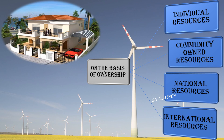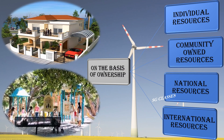Here I have shared a picture showing examples of individual resources — a car and a house. Another picture shows a park or garden, which is a community-owned resource that any age group can go and use.